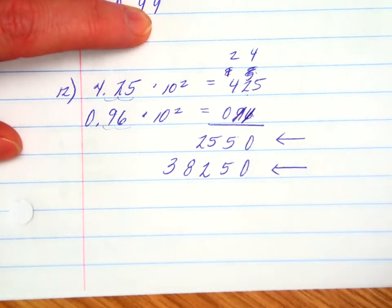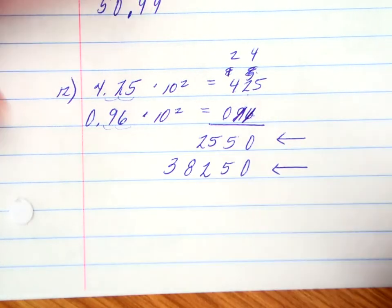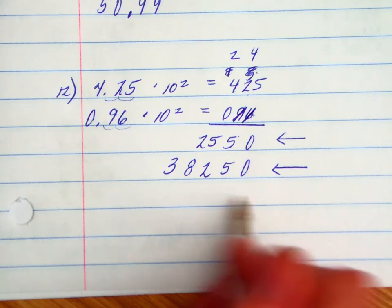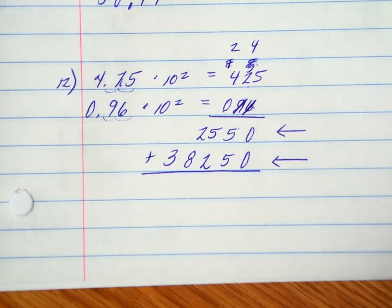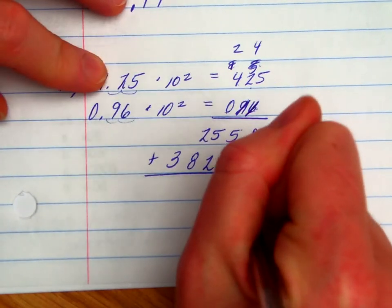Cross that out. I took care of the tens place. This place value is really just going to create a row of zeros, so it's completely unnecessary. Now what do I do now with my partial products? If you said add them, you are correct. I'm going to add my partial products.